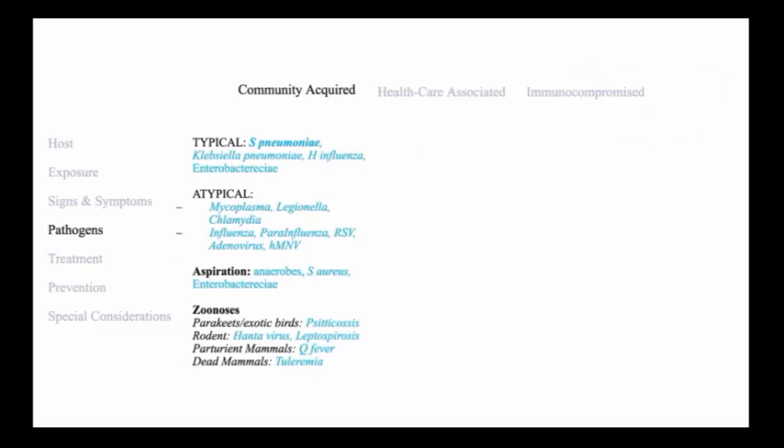The pathogens of typical community-acquired pneumonia is strep pneumoniae. Additional pathogens include haemophilus influenzae, klebsiella pneumoniae, occasionally enterobacteriaceae.